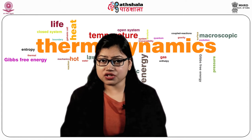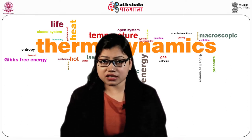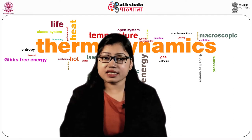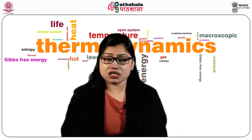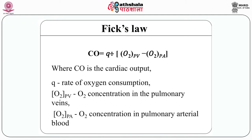Now, carbon dioxide and oxygen utilization. There is a relationship between cardiac output and heart rate. As the respiratory rate is associated with oxygen consumption, there is a relationship between cardiac output and oxygen consumption. It was Fick who first introduced the concept and devised the mathematical equation. The cardiac output = Q / (O2PV − O2PA), where CO is the cardiac output, Q is the rate of oxygen consumption, O2PV is the oxygen concentration in the pulmonary veins, and O2PA is the oxygen concentration in the pulmonary arterial blood. This equation helps us to calculate cardiac output in an intact human being.